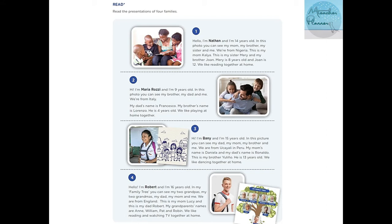Number two: Hi, I'm Maria Rossi and I'm nine years old. In this photo you can see my brother, my dad, and me. We are from Italy. My dad's name is Francesco. My brother's name is Lorenzo — he's four years old. We like playing at home together. Hola, soy Maria Rossi y tengo nueve años. Nos gusta jugar en casa juntos.